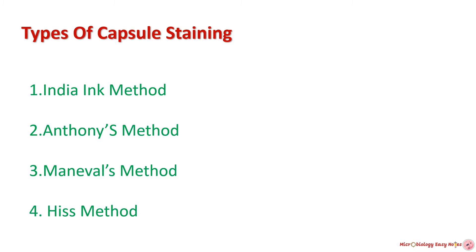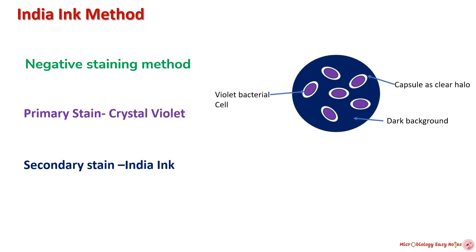Methods of capsule staining: capsule staining employs various techniques, among which the most common methods are the India ink method, Anthony's method, Maneval's method, and His method. The India ink method is a type of negative staining method.